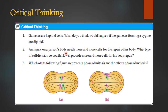Critical thinking question 2: An injured person's body needs more and more cells for repair. What type of cell division do you think will provide more cells for body repair?